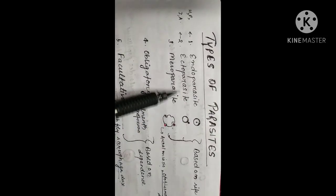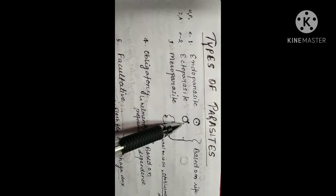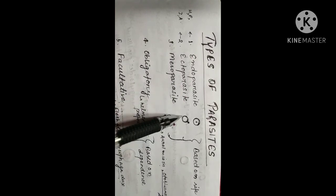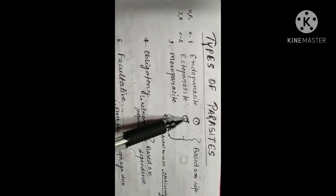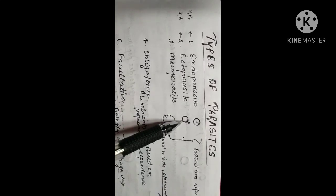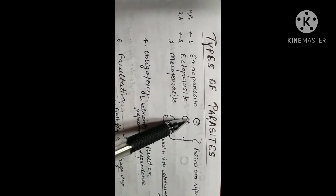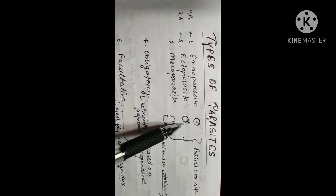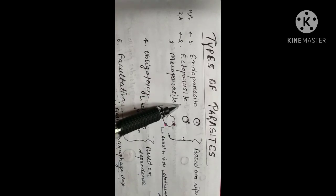The next is ectoparasite. Ectoparasites are those parasites which reside outside the body of the host, that is, on the skin. For example, insects and arachnids — such as mites and ticks — which reside on the skin. These parasites are called ectoparasites.